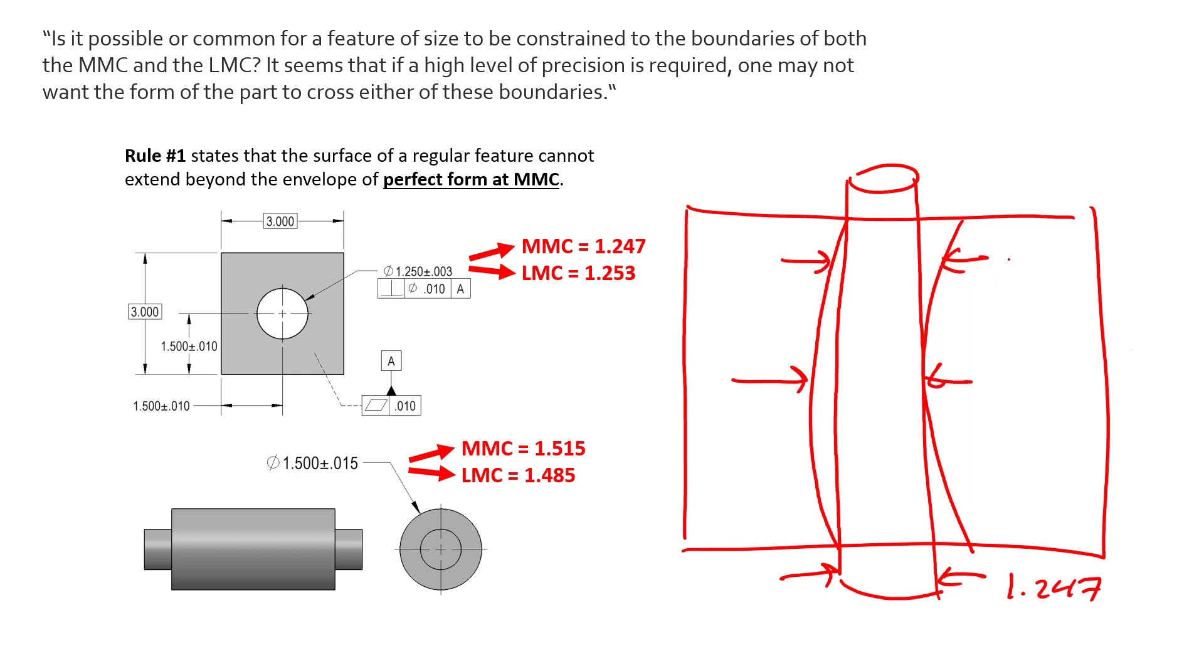measure at 1.253 or the LMC, we can have up to six thousandths of form error and still have a passing part as per Rule Number One. So we've restricted the amount of form error up to a perfect envelope